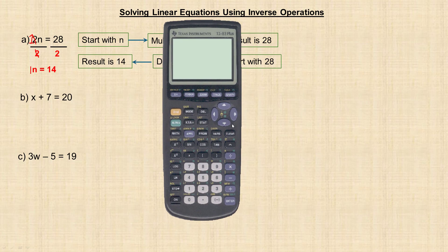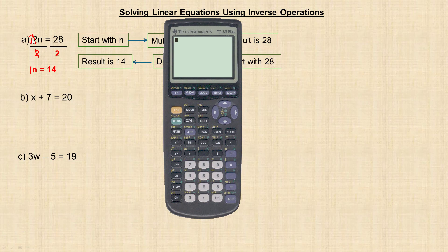We get n equals 14. So we think that the answer is 14. I'm going to bring my calculator over. The original equation was 2n equals 28. So if I take 2 and multiply it by what I think n is, 2 times 14, notice that does give me 28. So that demonstrates that n, the value for n, is 14.